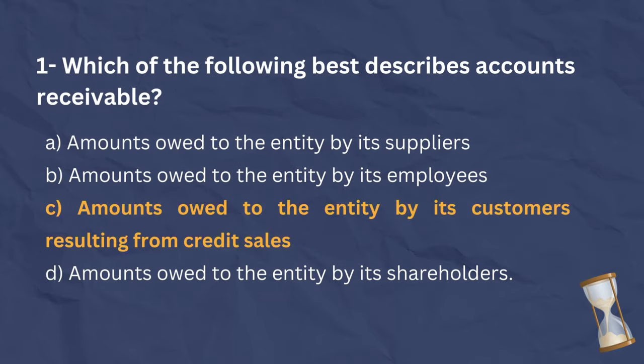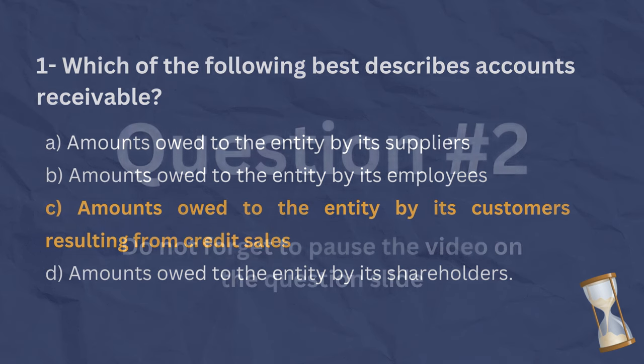The correct answer is C. Accounts receivable refers to the amounts owed to an entity by its customers resulting from credit sales in the ordinary course of business. It represents the money expected to be collected from customers.